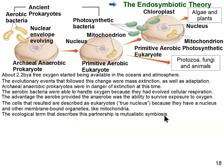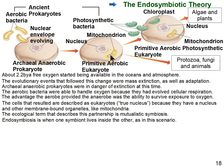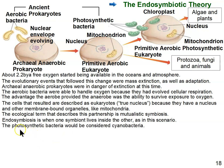This partnership is mutualistic symbiosis — a form of symbiosis that benefits both partners. Endosymbiosis is when one partner in the symbiotic relationship lives inside the other. For example, you have bacteria that live in your digestive tract — they are your endosymbionts. There are two branches to this diagram: one endosymbiotic event gave rise to eukaryotes with mitochondria, which includes protozoa, the animal-like protists, fungi, and animals, including us.